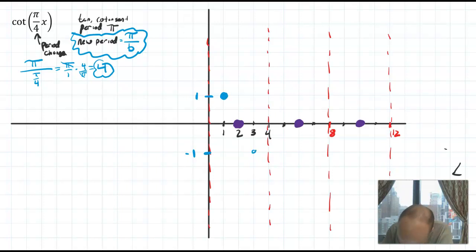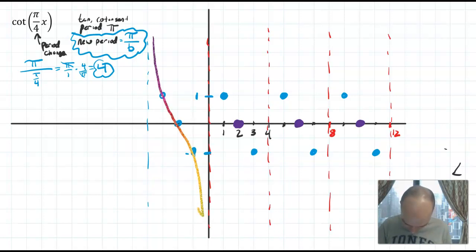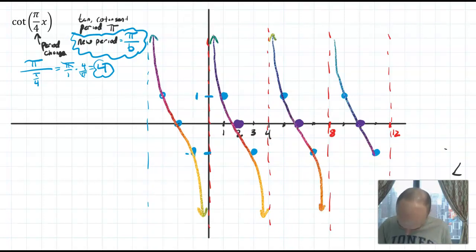So I know that cotangent decreases. This is coming just from the knowledge of the parent graph. You've got to know your parent graphs. So if you know the parent graph of cotangent, you now know the entire pattern and how it repeats. You could even do a negative period of cotangent if you wanted. Same deal. So you get out your favorite rainbow pen. And that's cotangent π/4 x.